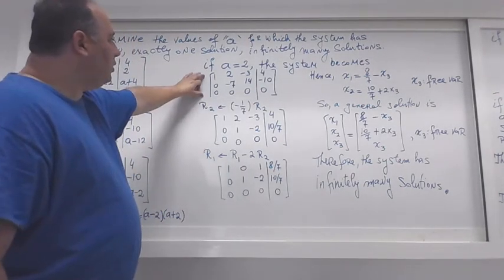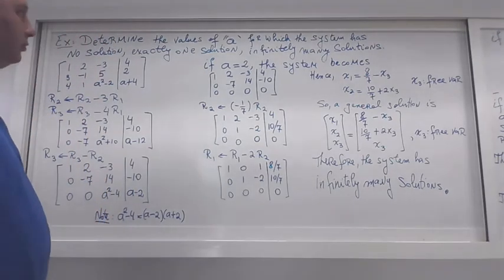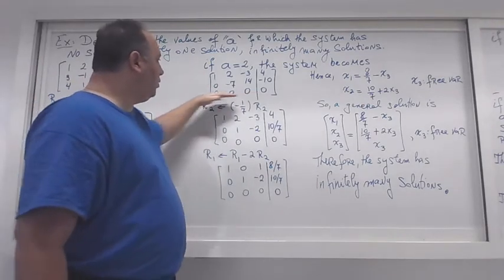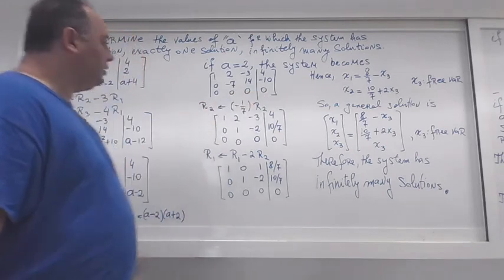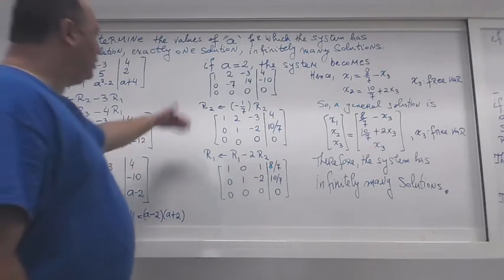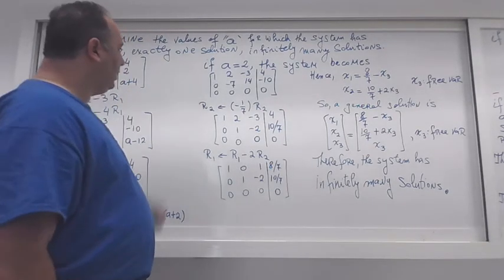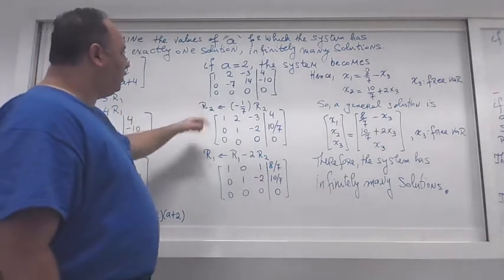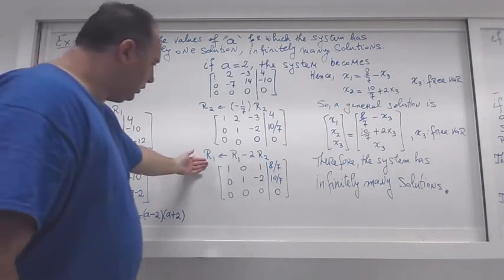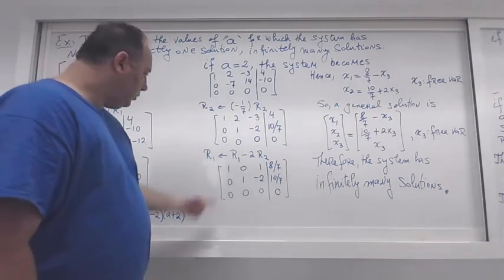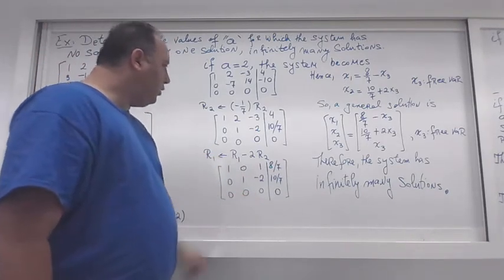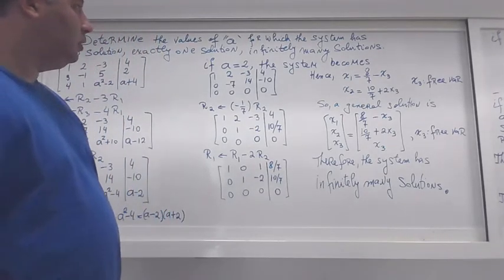From this we already know the system has infinitely many solutions when a = 2, since the last row is all zeros including a zero on the right-hand side. I'll push further to find the form of the solution. Dividing row 2 by -7 and continuing row operations to reach reduced row echelon form, we identify the leading entries and find that x3 is a free variable.